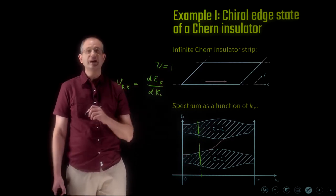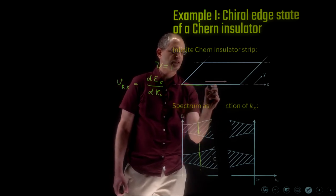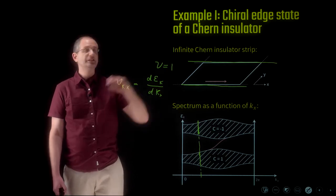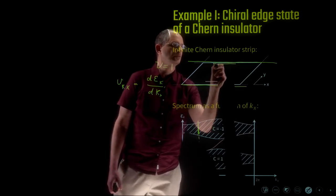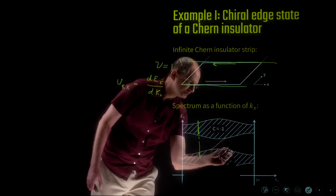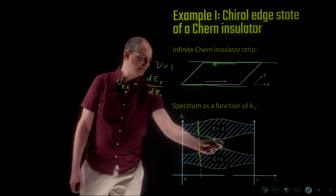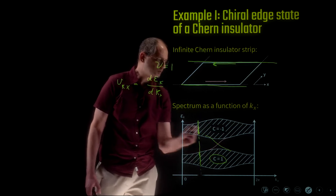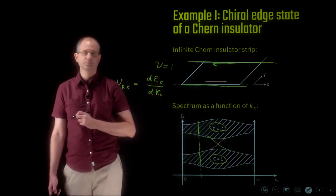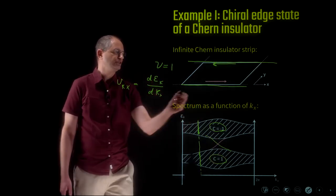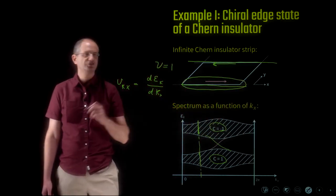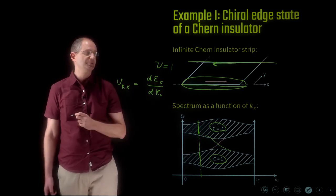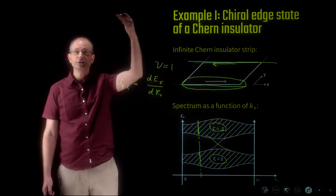Of course, if our system were finite in the y direction — a strip — then the other boundary is also an edge. In that other edge there has to be a counter-propagating chiral edge state moving in the opposite direction. The spectrum of this other surface slopes the other way. The chiral edge state always connects in energy the two bands. In this example the lower band has Chern number plus one and the upper band has Chern number minus one.